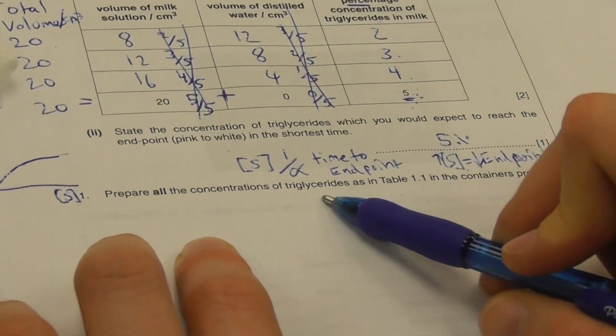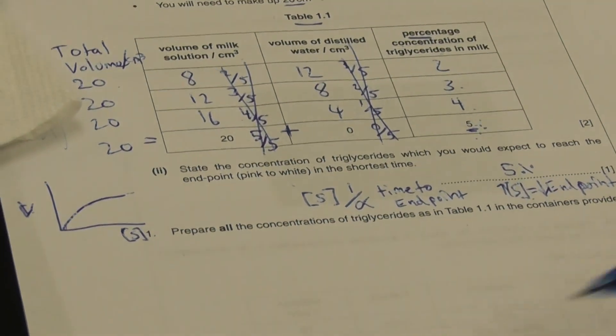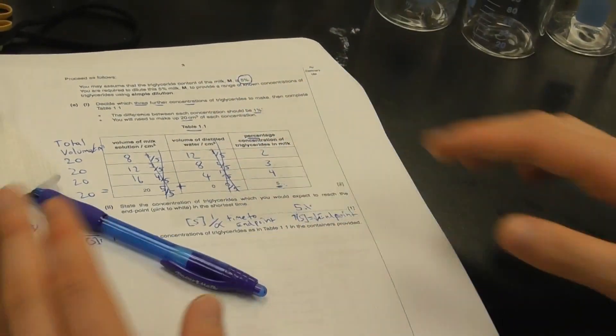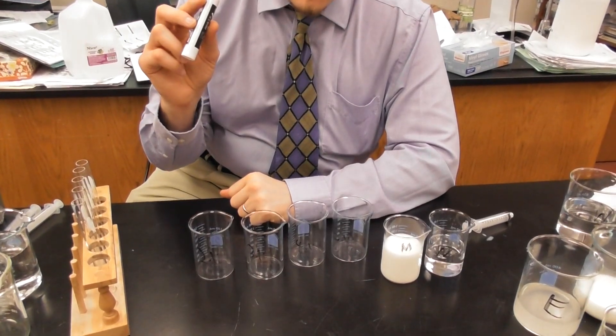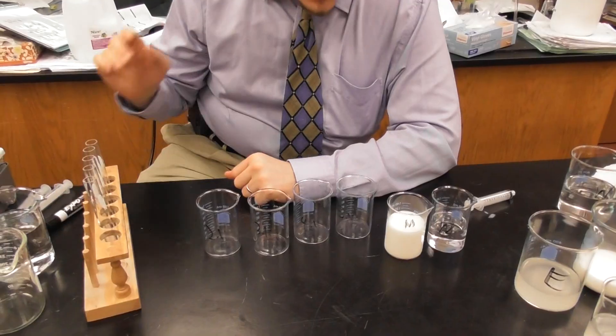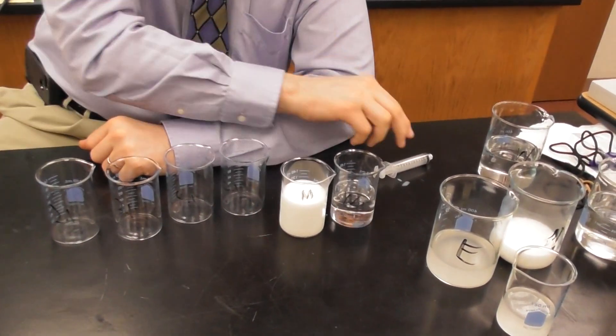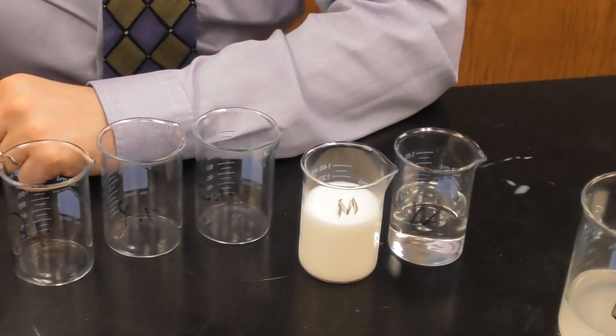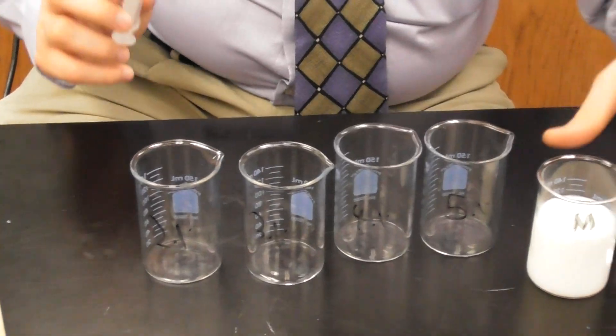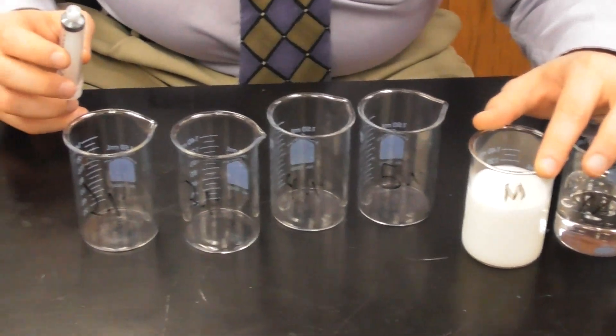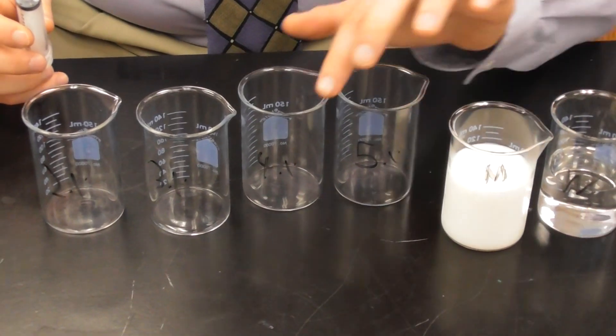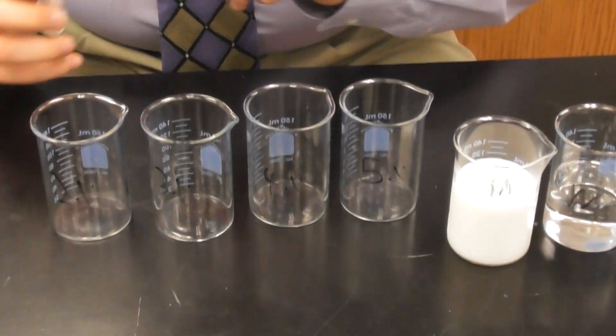Our step one of our reaction is to prepare the concentration of triglycerides in table 1.1 in the containers provided. So we're going to scroll over here and I'm going to perform this simple dilution right now. Using my marker, my glass marking pen, I have pre-labeled all of these beakers and I am going to perform my serial dilution now.